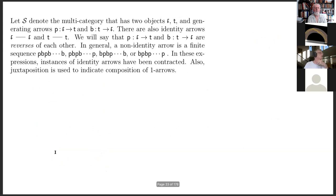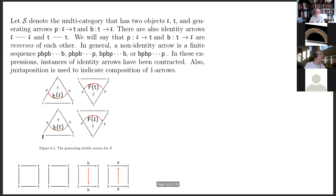We have two objects, F and T. We're going to start out with a multi-category having two objects F and T, with generating arrows P and B. There'll also be identity arrows from F to F and from T to T. P and B are reverses of each other. A non-identity arrow is a sequence starting with P and ending with B, or starting with P and ending with P, starting with B and ending with B, or starting with B and ending with P. The double arrows are going to be comparisons, going from the identity upon F compared with a composition PB.